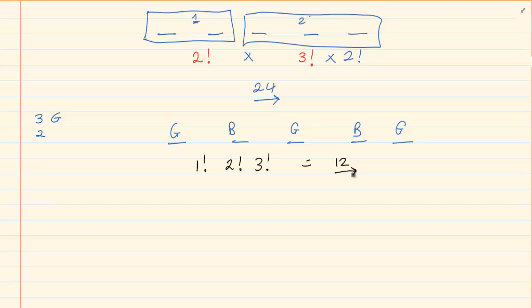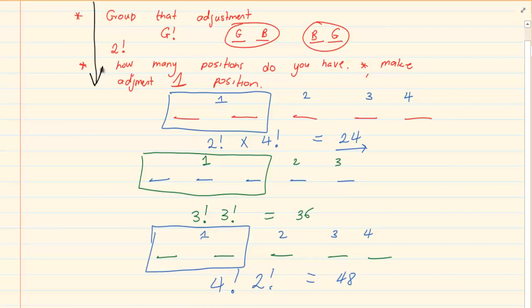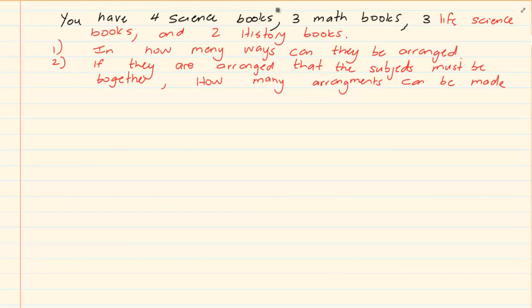Remember, sometimes when you are doing this you need to think out the answers — sometimes it is not as easy as the groups, but most of the time the group rules will work. Now let's take the following one. You have four science textbooks, three maths textbooks, three life science and two history books. In how many ways can they be arranged? We have twelve books total. They are not giving us any specific arrangement or specific position, so we know our answer is simply twelve factorial.